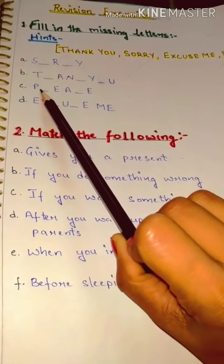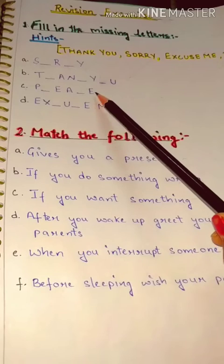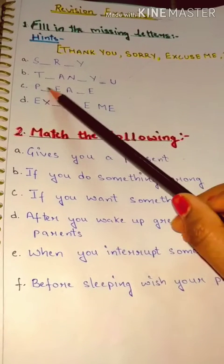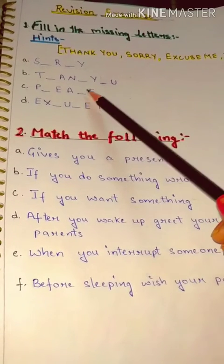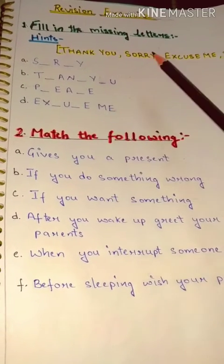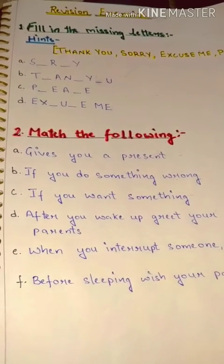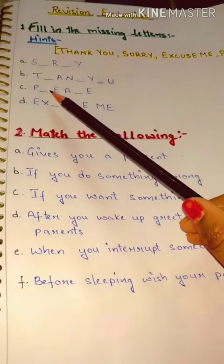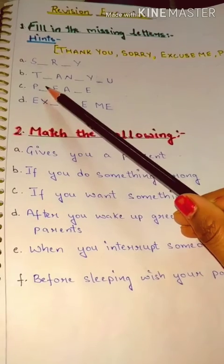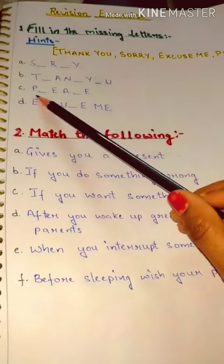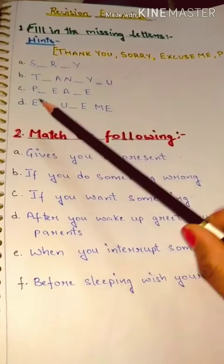Number C — the word starts with letter P and ends with letter E. Let's count how many letters are missing. Again, take help from the hint box, find the missing letters, and write them in the blanks.